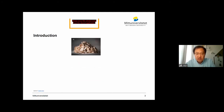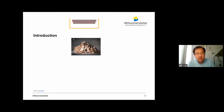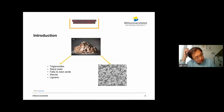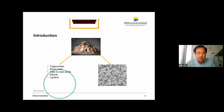Cellulosic biomass, as a concept of biorefinery, can serve many purposes. It is the most promising alternative to replace fossil fuels, to produce sustainable chemicals and also novel biomaterials. We'll start with the sustainable chemicals.